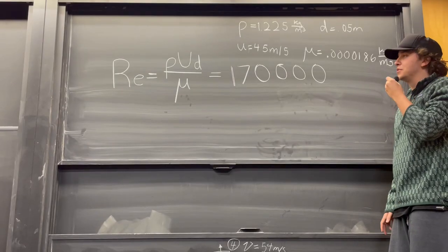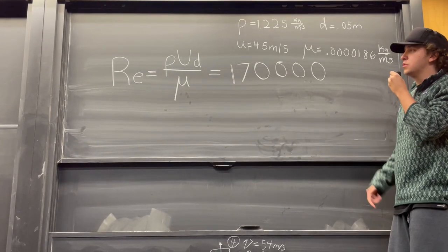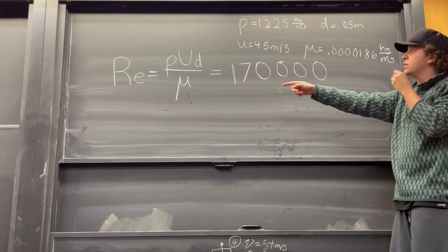Our Bernoulli analysis can be validated by looking at the Reynolds number in the system. That's the equation over there.